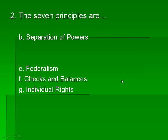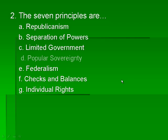The seven are listed here and the three that we're talking about today are: republicanism — being a republic and representative government — separation of powers, limited government, popular sovereignty, federalism, checks and balances, and individual rights. We have talked a lot about almost all of those things, so in this unit you really just need to be remembering back to when we talked about these things and getting more detailed in them.